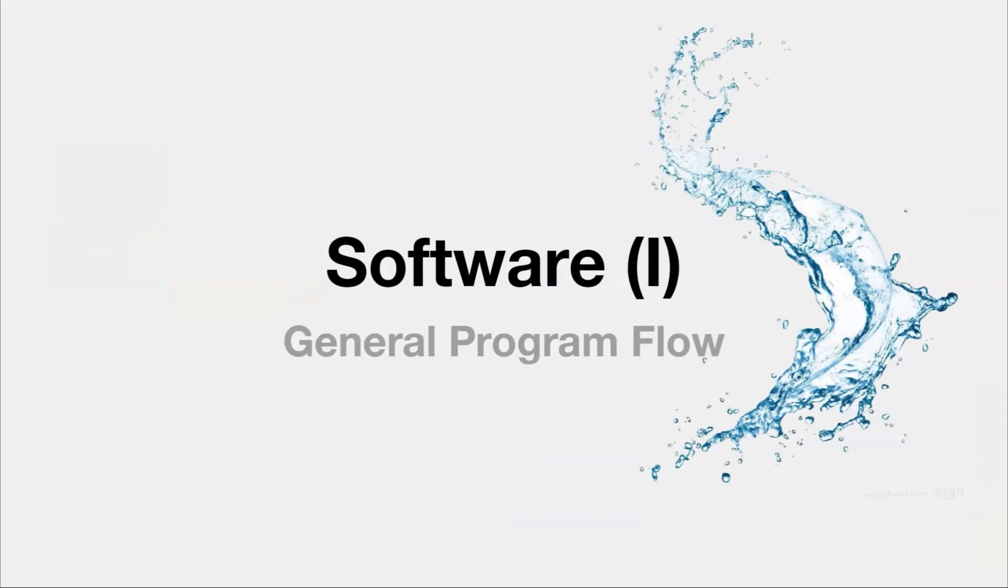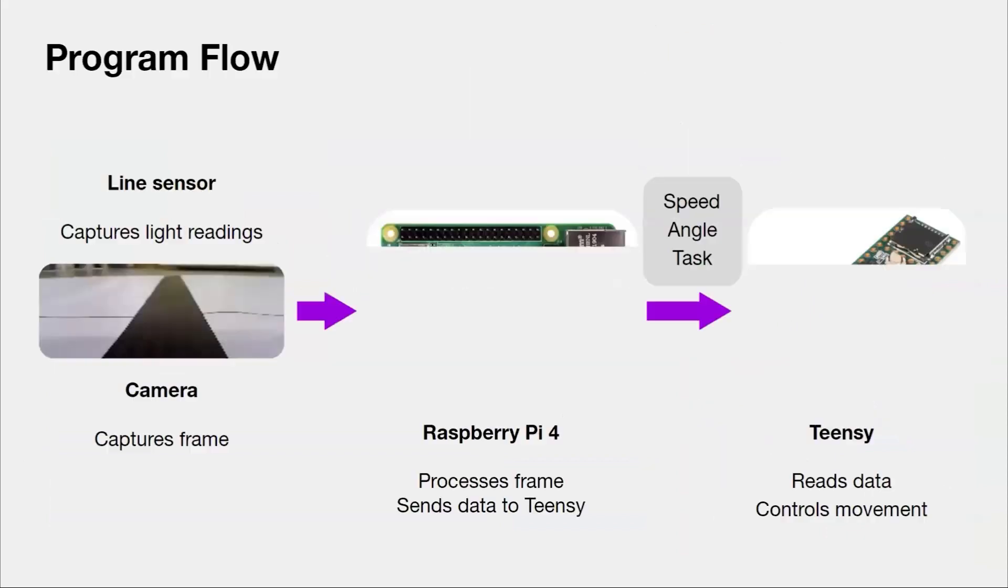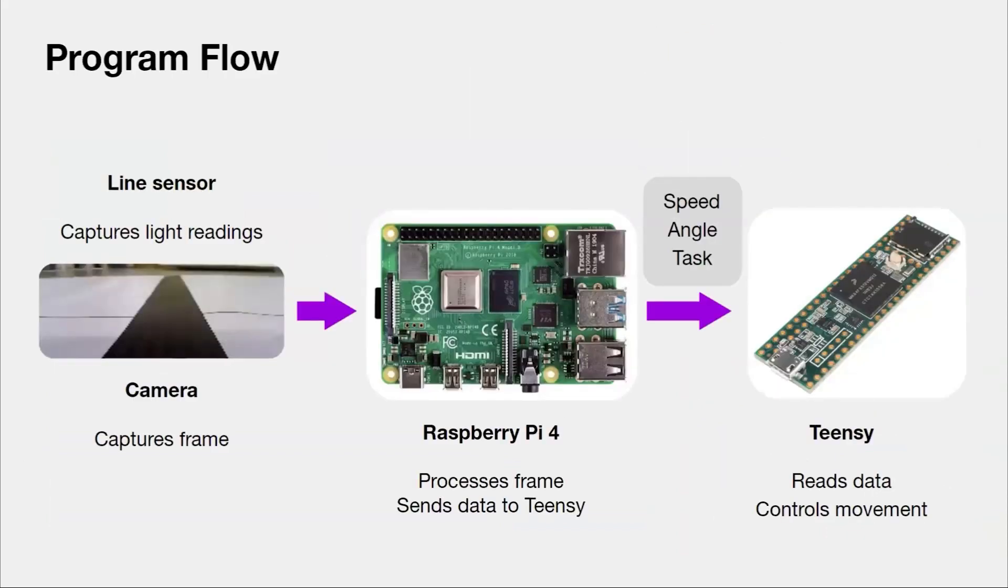Next, I'll be explaining our software design. We made sure to use both vision and color sensing in tandem to most reliably tackle all the map elements. For the camera, in each loop, the camera captures the frame and the RPi processes the image. It then sends data via UART to Teensy, which controls the robot's movements. Both the light sensor and camera functionalities follow a similar process. The data sent over are the speed, angle, and task number.